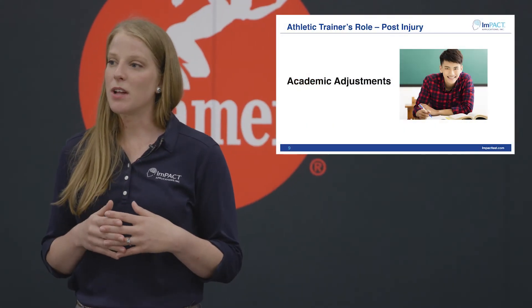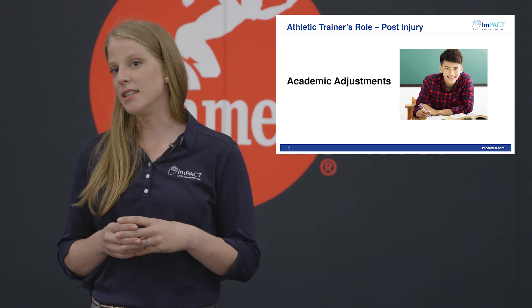Regarding academic adjustments: up to 95% of concussed athletes will have some form of informal academic adjustment. This can include letting the student leave class five or ten minutes early to avoid a busy hallway if they have residual vestibular issues, or having another student take notes for them if they have visual issues. It is up to the athletic trainer to work with teachers and the school psychologist or counselor to ensure that these informal adjustments are being implemented properly.